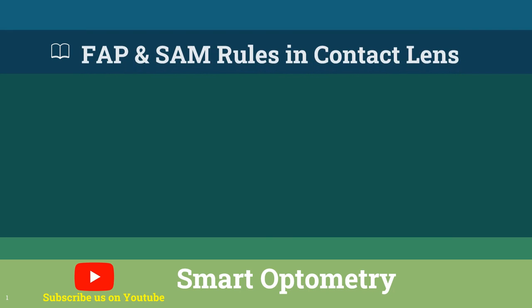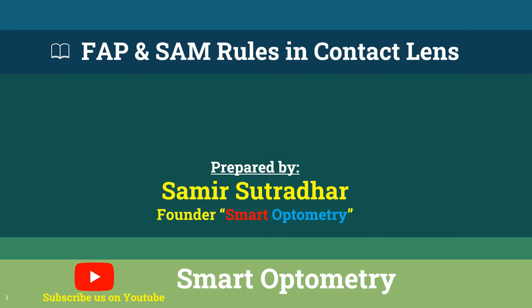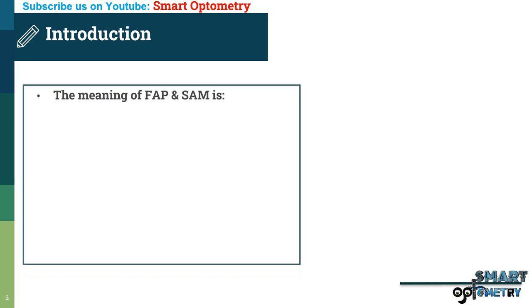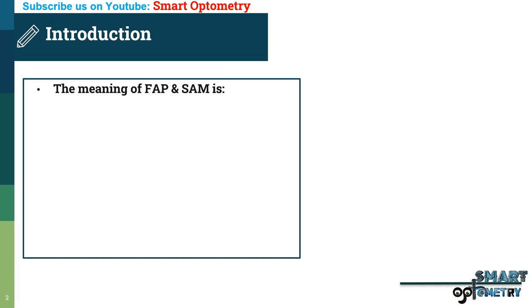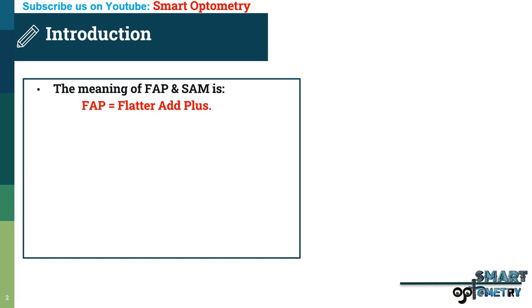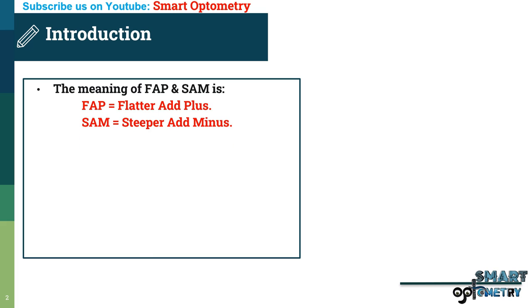Today I will discuss FAP and SAM rules in contact lens. FAP means Flatter at Plus, and SAM means Steeper at Minus.